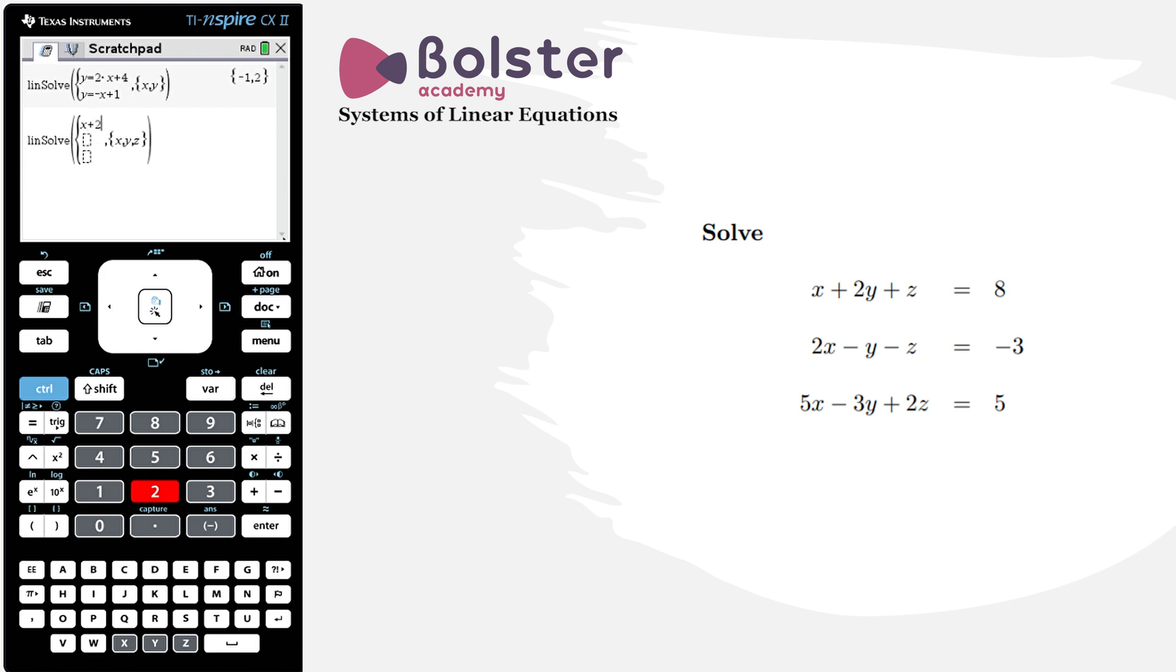It doesn't matter what order I put these equations in, just going to fill them in exactly as they are written. So x plus 2y plus z is equal to 8, down arrow to get to the next box, 2x minus y minus z is equal to minus 3, and we have 5x minus 3y plus 2z is equal to 5.